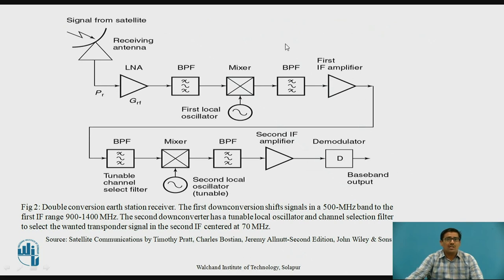This figure shows a two-stage double conversion earth station receiver. It first down-converts the signal in a 500 MHz band to the first IF range of 900 to 1400 MHz — receiving the signal from a 5 GHz satellite and converting it to 900–1400 MHz. The first stage consists of an LNA, band pass filter, local oscillator, and mixer converting RF to IF. After the first stage, the IF signal is carried via coaxial cable to the receiver side, where a second mixer and local oscillator convert it to the second IF amplifier, after which it is sent to the demodulator.